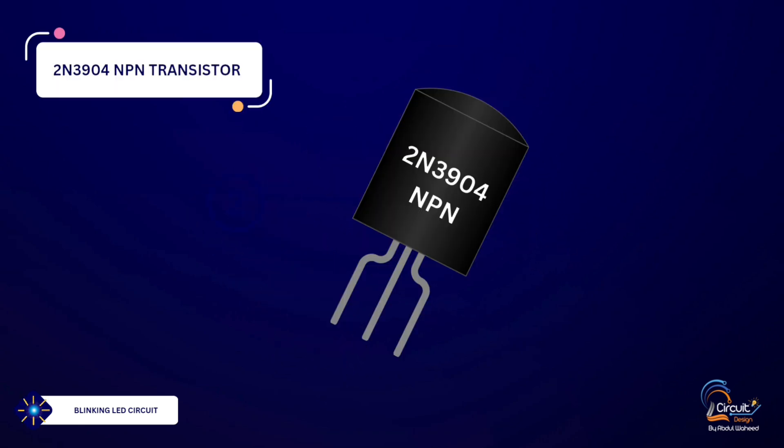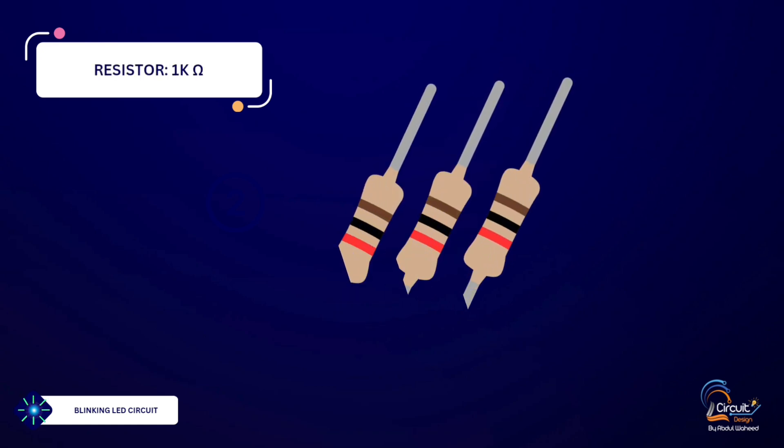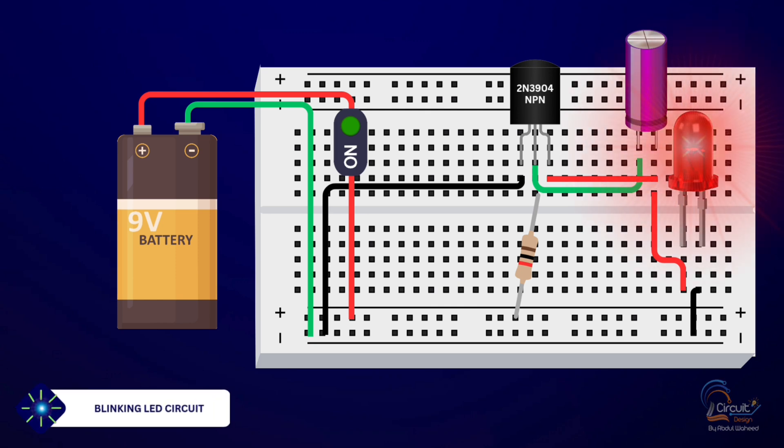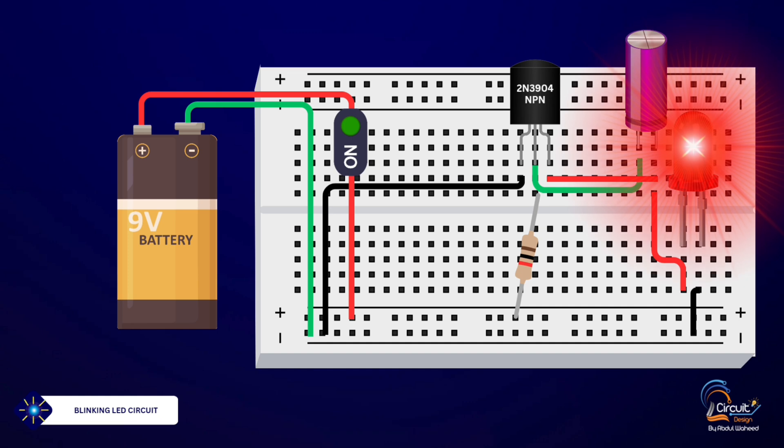This is quite challenging because typically additional components like transistors or resistors are needed to achieve the blinking effect. However, I can guide you through a basic circuit that uses a capacitor along with a few other components.